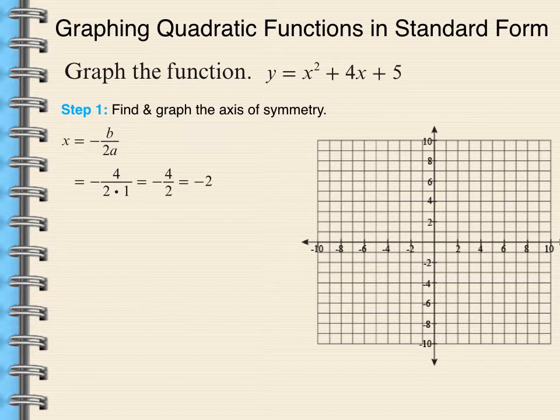Now where we get the a and the b in that formula is in the coefficients of the function that's given. So a in the given function is 1 because it's 1x squared. b is 4 because it's 4x. And c, the constant term, is 5. So we want to do the opposite of 4 divided by 2 times 1. That's the opposite of 4 over 2, which is negative 2. So x equals negative 2 is my axis of symmetry.